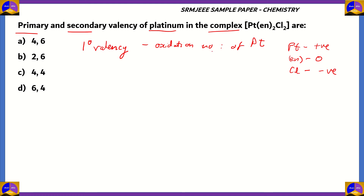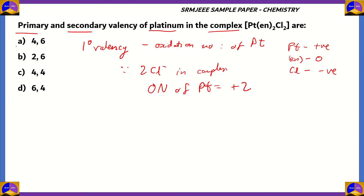In order to find the oxidation number of platinum, we count how many negative ions are present in this complex and put in the exact amount of positive charge that will make the complex neutral. Since we have 2 chlorine minus ions in the complex, the oxidation number of platinum will be plus 2. The only option that's suitable is option B. Chlorine has a charge of negative 1, and since we have 2 ions, platinum will have plus 2 as its positive charge.